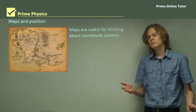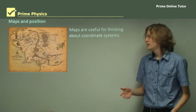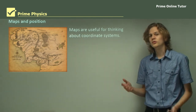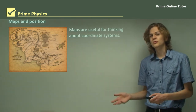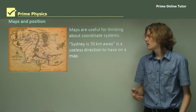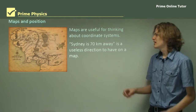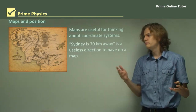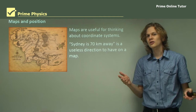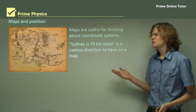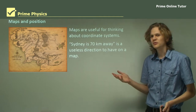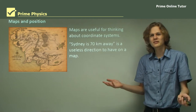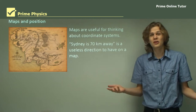Now, maps and position. Maps are useful for thinking about coordinate systems, which are what we usually use to measure position. Having 'Sydney is 70 kilometers away' in a big encyclopedia would be useless — 70 kilometers away from what? In what direction? It doesn't tell you anything.